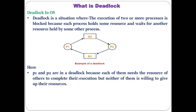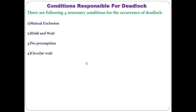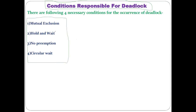Now the next important point, which is asked frequently in exams: the different conditions responsible for deadlock — the reasons because of which deadlock might occur in a computer system when the OS is controlling and allocating resources. There are four important conditions because of which deadlock can occur.